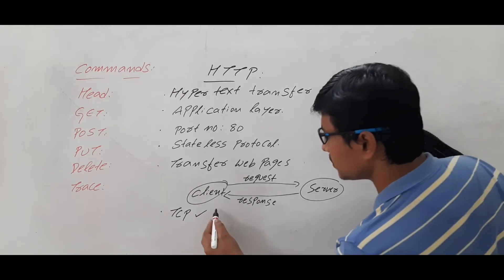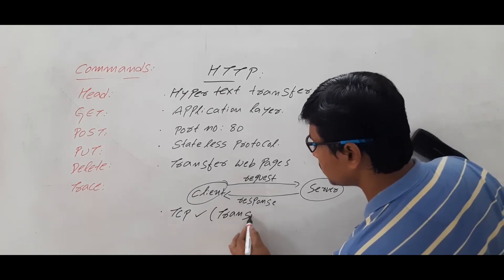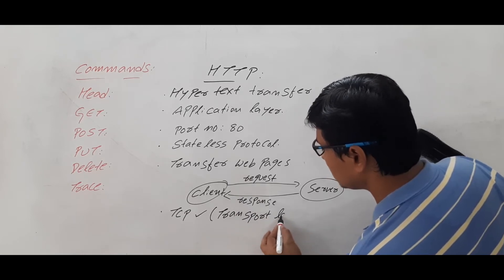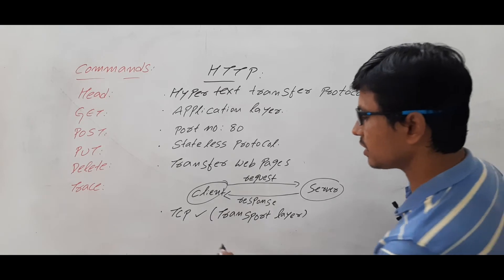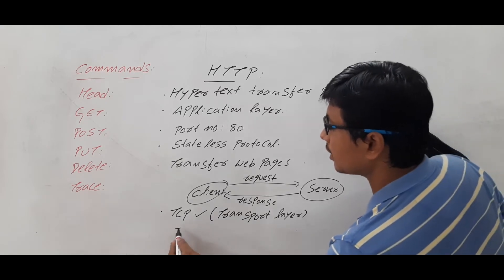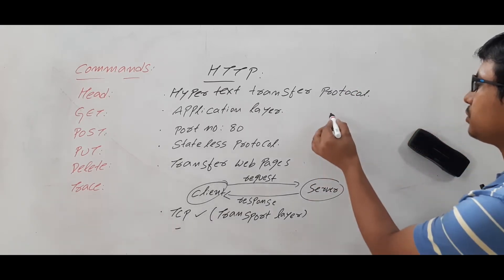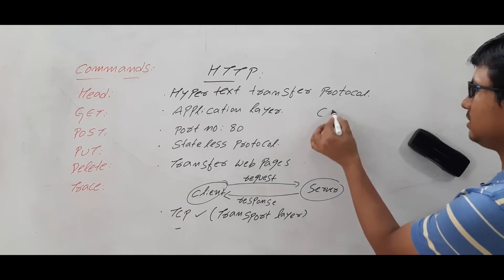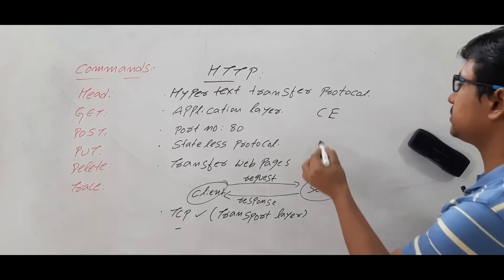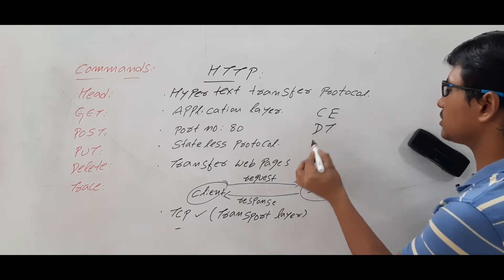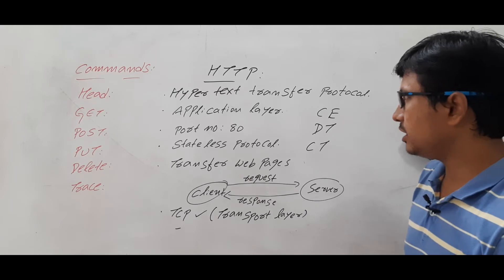HTTP uses TCP at the transport layer. TCP is reliable and connection-oriented, meaning you first establish a connection. In TCP, there is a connection establishment phase, then data transfer, then connection termination.